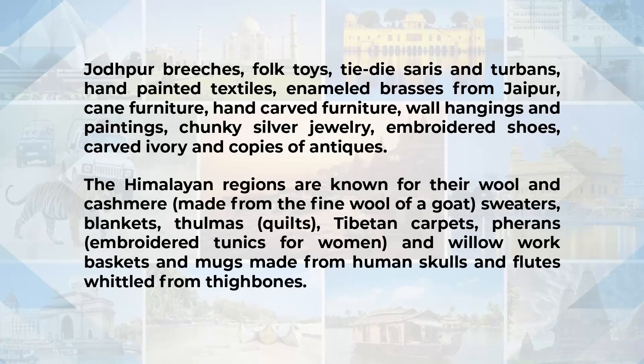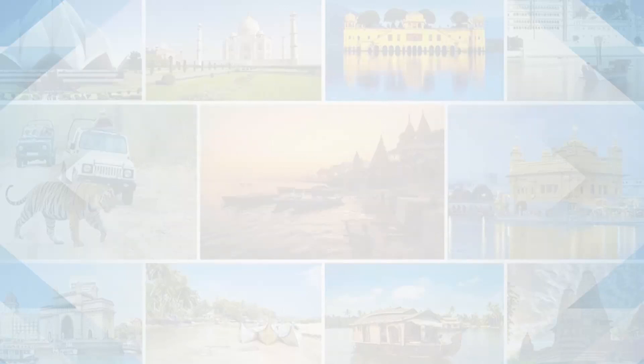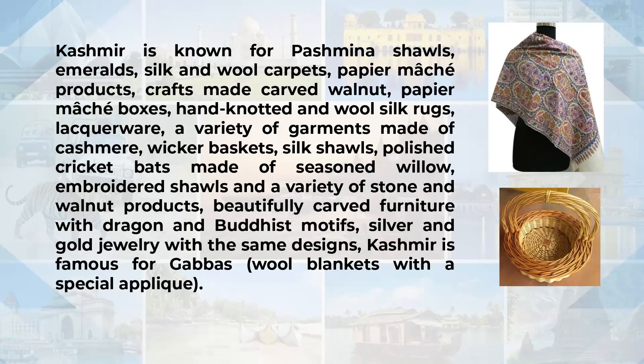The Himalayan region is known for its wool and Kashmir wool, made from the finest wool of a goat. The items made include sweaters, blankets, quilts, and Tibetan carpets, which are very popular. Embroidered tunics for women are also very popular. Kashmir is known for its pashmina shawls, emeralds, silk and wool carpets.